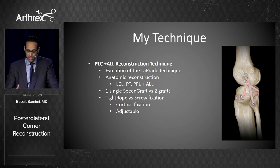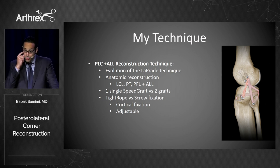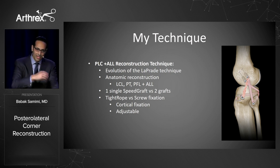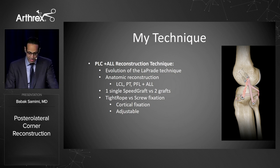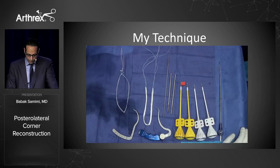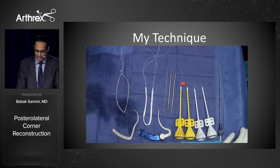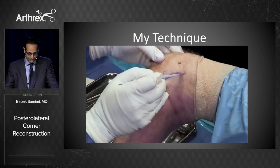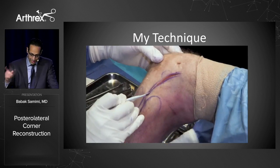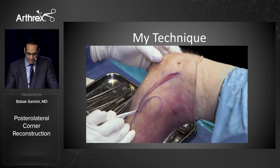I use a tightrope with cortical fixation rather than screw fixation, which allows adjustability and retensioning ability. In a multi-ligament injury scenario — when you've got an ACL or PCL reconstruction combined with the posterolateral corner — it allows you to come back, retension, and reassess. This technique requires a few supplies.